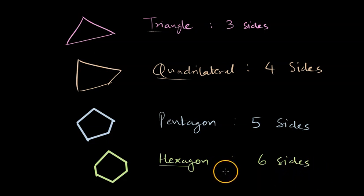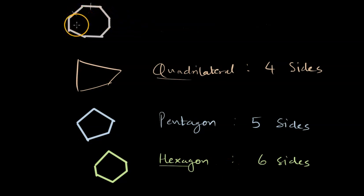Similarly, the shape having eight sides or eight angles is known as an octagon. So this is an octagon having eight sides. And this is how we classify different polygons depending upon how many sides they have.